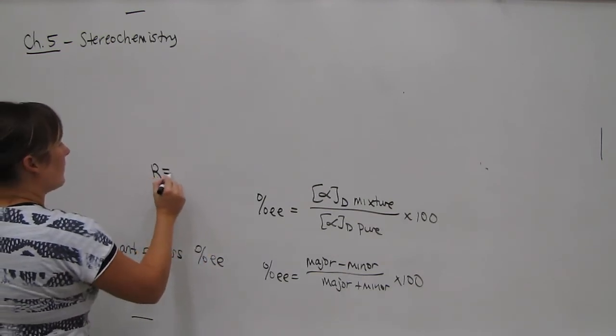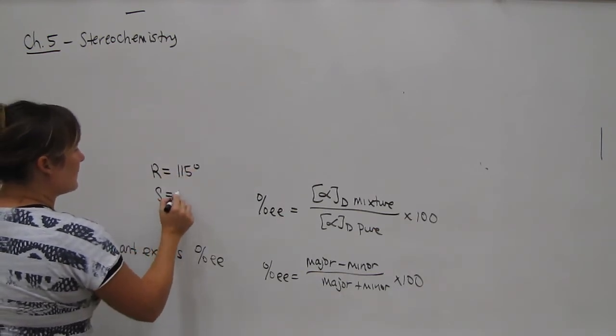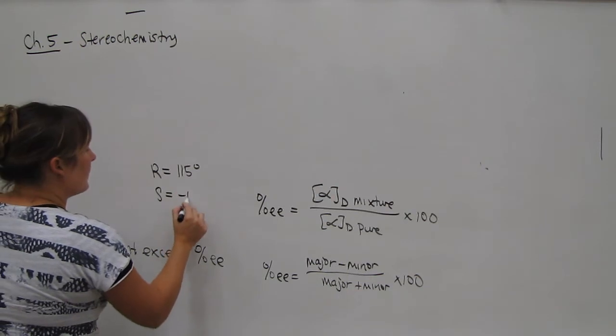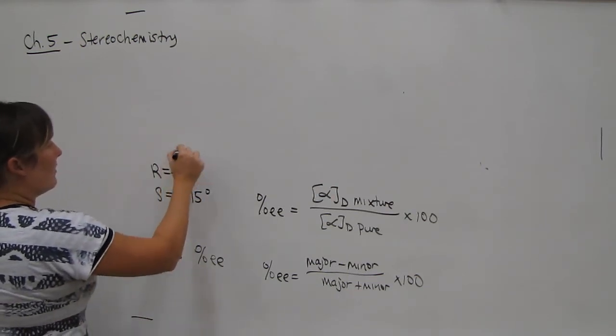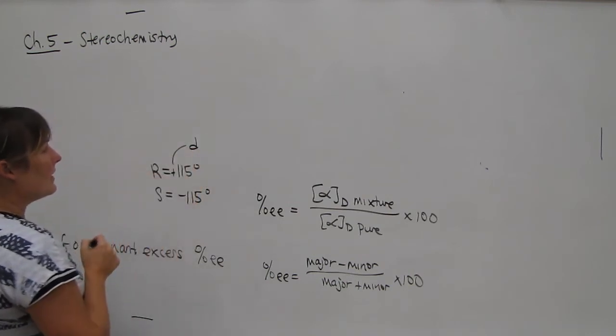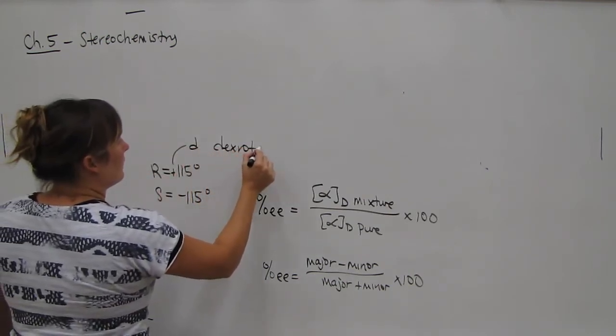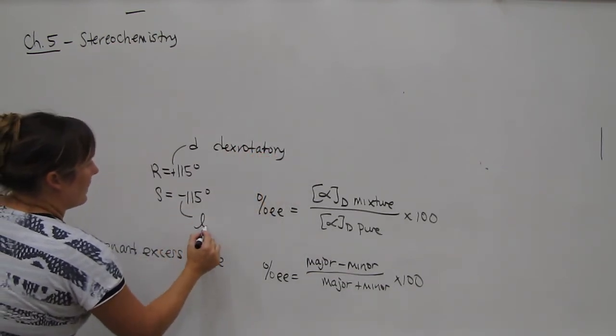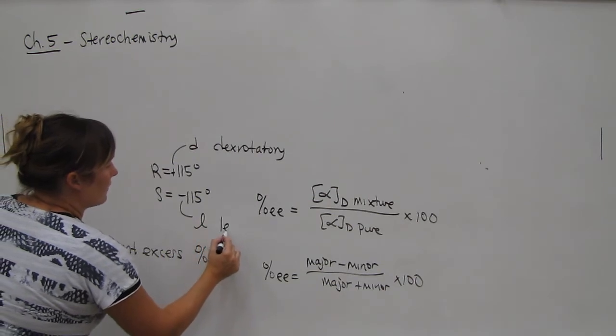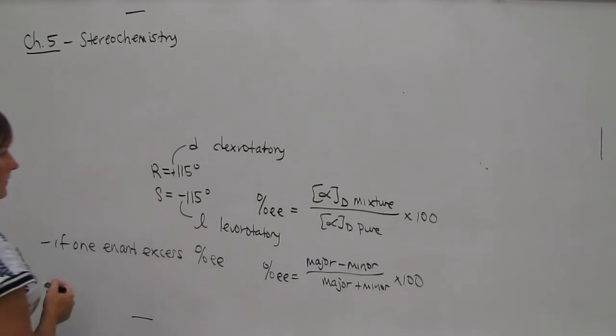So if pure R is 115 degrees, pure S would be the opposite, which is negative 115 degrees. A positive is known as D, which is dextrorotatory. And negative is L, which is levorotatory. So lowercase d and L.